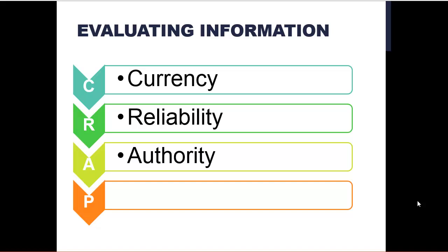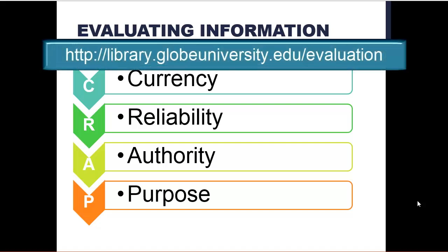The A is for authority. Who is the author and do they have the credentials to be writing about this topic? The P is for purpose. This is where you'll look for bias and ask yourself why it's been published. You can review these concepts by viewing our evaluation guide at Library Connect.